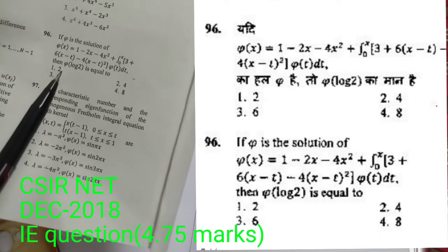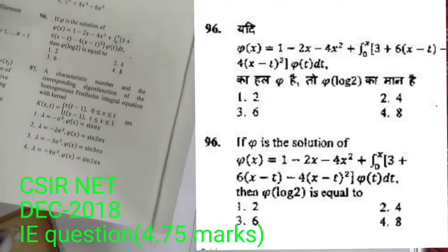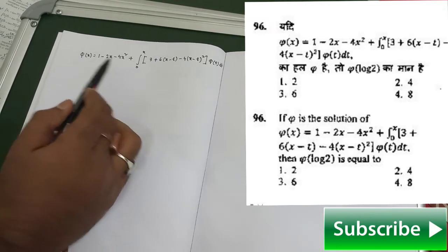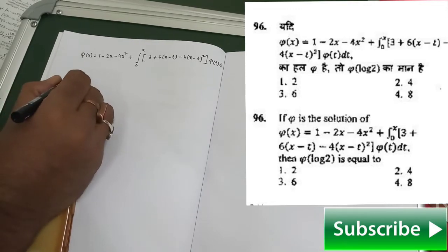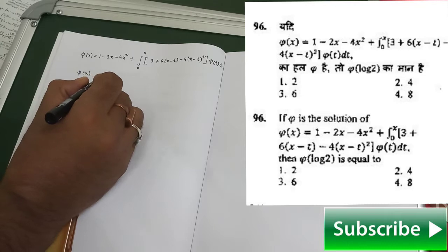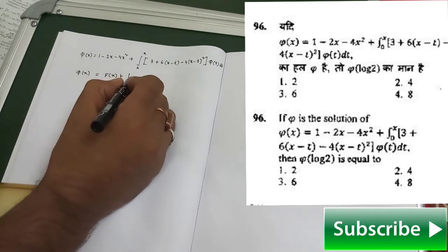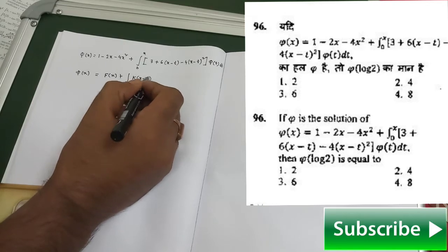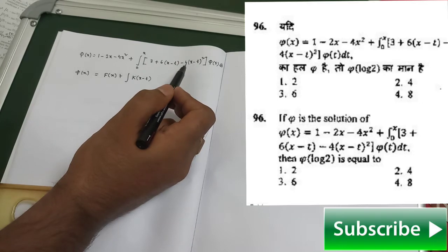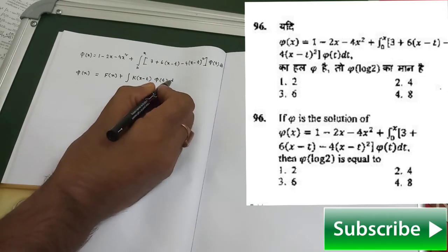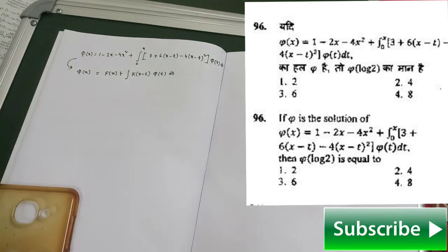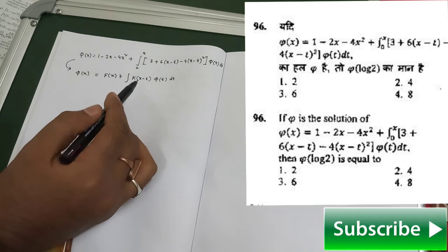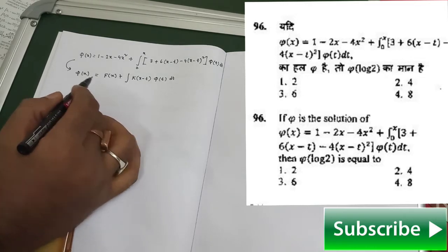So we need to use some trick. This given integral equation is of the form φ(x) = f(x) plus an integration where the kernel is a function of x minus t — that is basically a difference kernel — multiplied with φ(t) dt. Whenever an integral equation of this form is in front of us, we can simply use Laplace transformation to solve it.